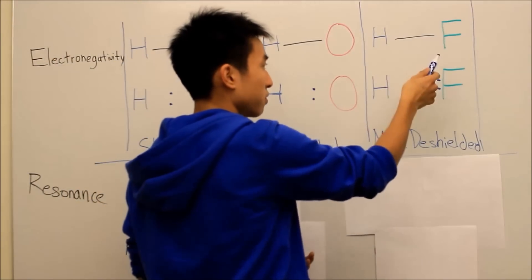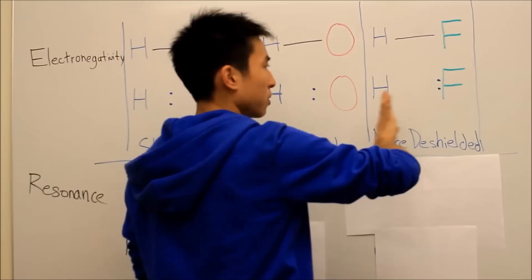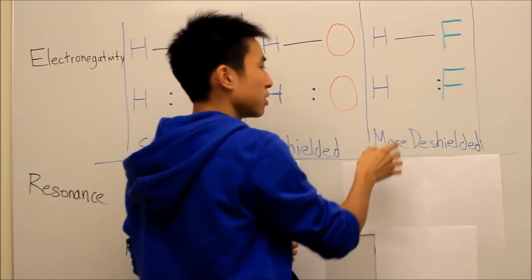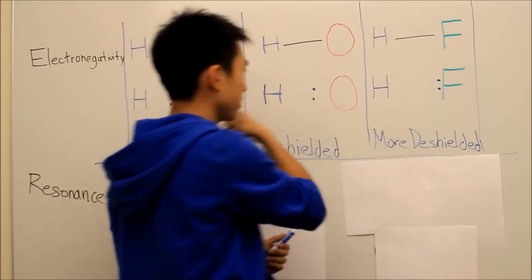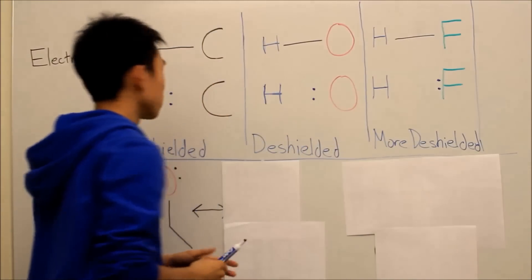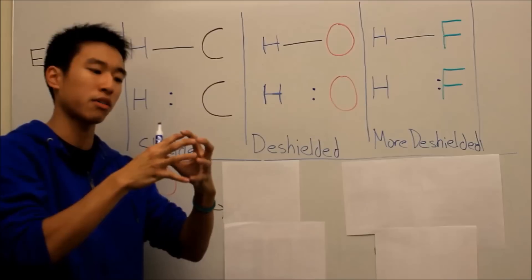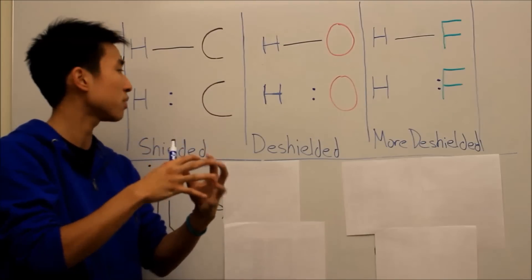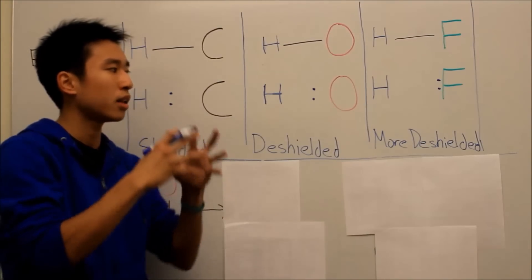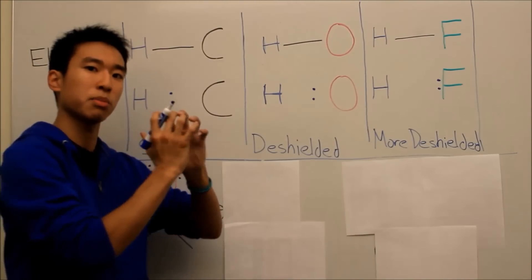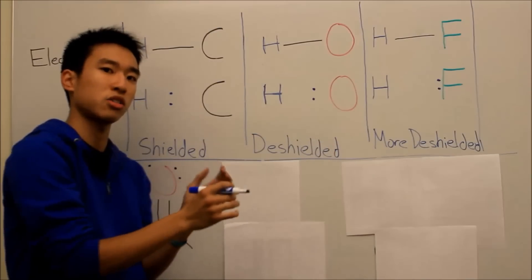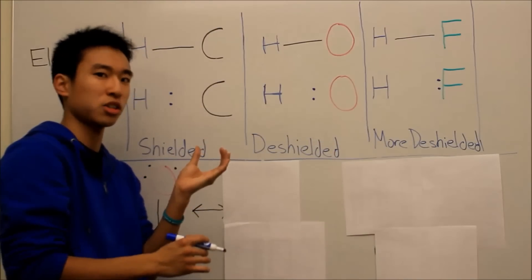And this example here with hydrogen and fluorine, the electrons are almost all the way up to fluorine. So this is the most deshielded hydrogen out of these two. So shielded basically just means there's more electrons forming that protective shell around the hydrogen. And then deshielded just means that the electrons that usually form that shell are being pulled away. So now the hydrogen is kind of sitting by himself, not shielded.